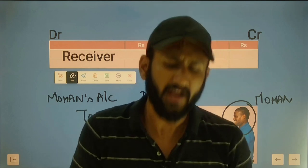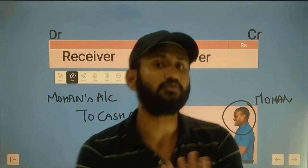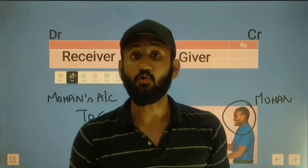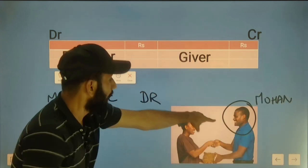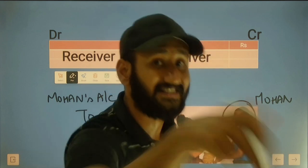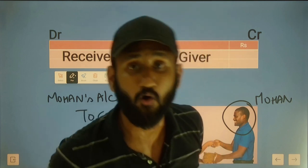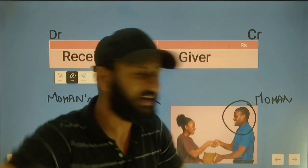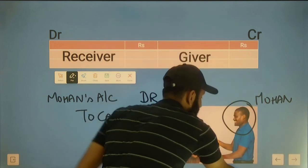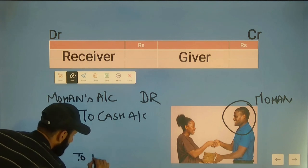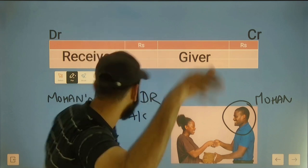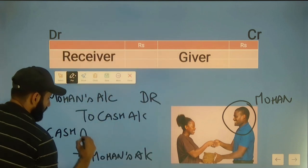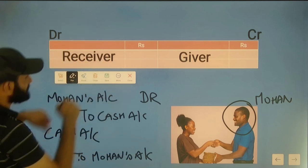Personal account and real account - this is a mix. It is a rule: personal account - debit the receiver and credit the giver. Real account - debit what comes in and credit what goes out. If we give money, it is a personal account - Mohan is the receiver, so debit Mohan. Cash is a real account - credit what goes out. So the entry is: cash account debit to Mohan's account, or Mohan's account debit to cash account.